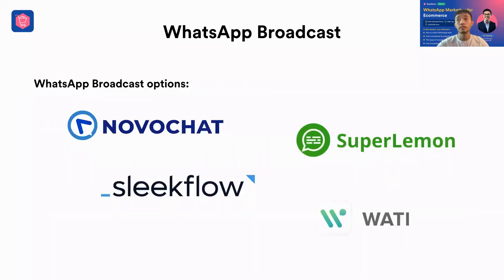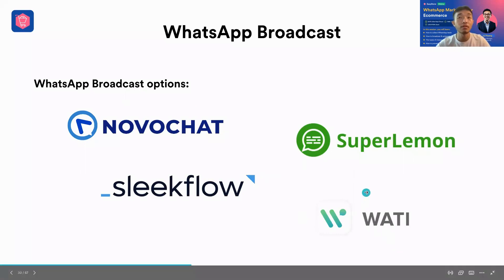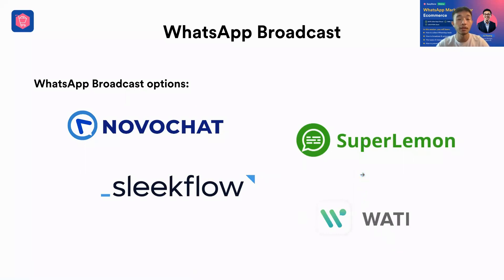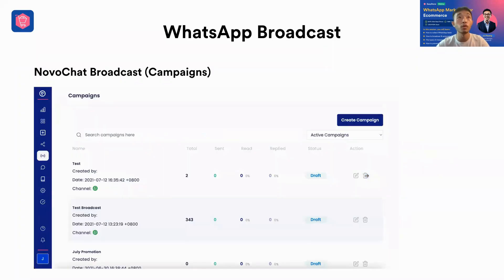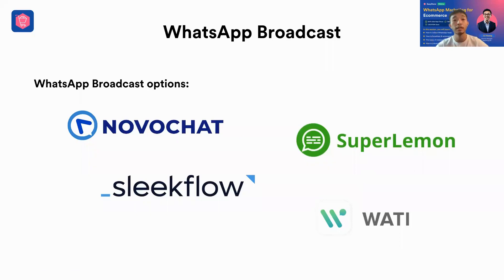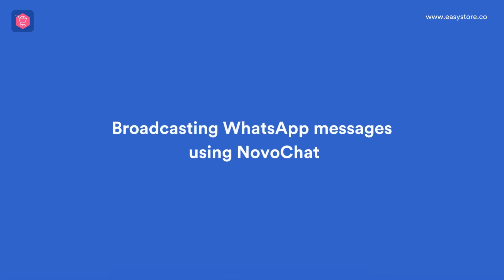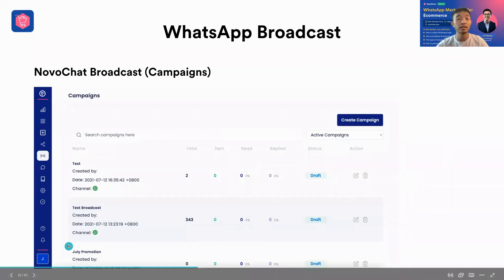That's where third-party broadcast tools come in — for example, Novo Chat, Super Lemon, Stick Flow, and Wati are some WhatsApp tools you can use for broadcasts and automations. Full disclosure: one of the sub-products of Easy Store is actually Novo Chat, so going forward I'll use Novo Chat as an example.